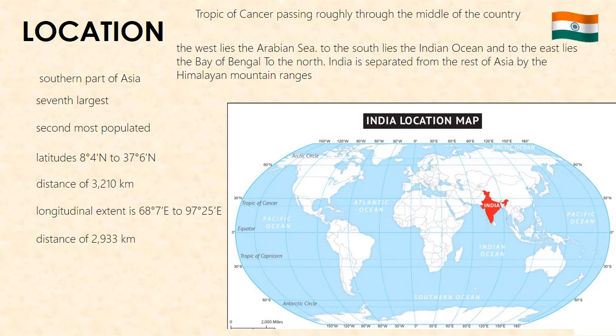India's coastline almost runs straight. As a result, the length of the coastline, including the islands, is only 7,570 km. Two island groups that are part of India are the Lakshadweep Islands in the Arabian Sea and the Andaman-Nicobar Islands in the Bay of Bengal. While Kanyakumari is the southernmost tip of the Indian mainland, India's territory extends up to Indira Point at the tip of the Nicobar Islands.